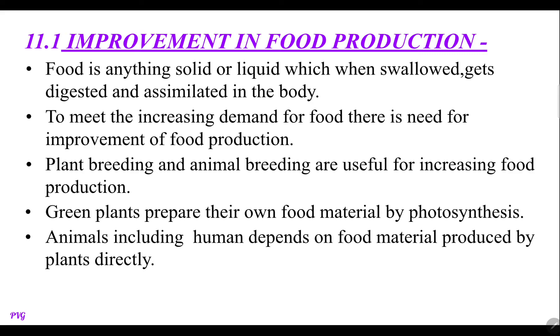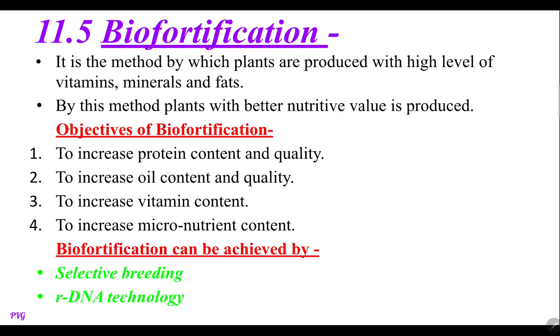By the process of photosynthesis, green plants prepare their own food material. Animals including humans depend on food material produced by the plants directly.